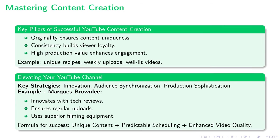The cornerstone of a successful YouTube channel lies in the originality of its content. Standing out in a sea of videos means developing unique content that isn't replicated elsewhere. Add to this a consistent upload schedule and you're laying the groundwork for strong viewer loyalty — your audience will know when to return for more. High production value amplifies your chances of winning over more viewers; good sound and lighting, coupled with adept editing skills, are the final jewels that can significantly enrich your content.